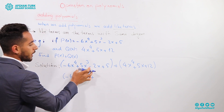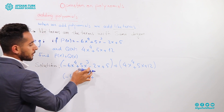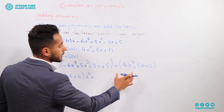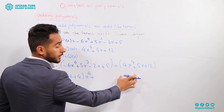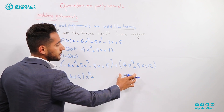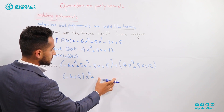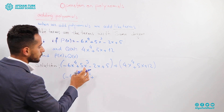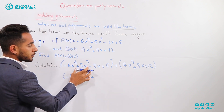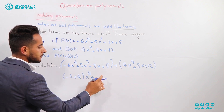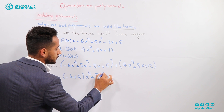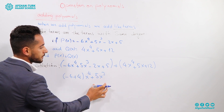The second term is 5x cubed. We are going to check whether there is another term with the same degree or not. No, we don't have one, so we are going to write it down as 5x to the power of 3 itself.